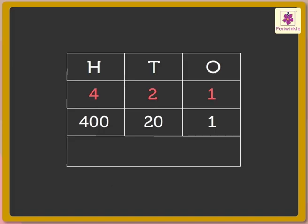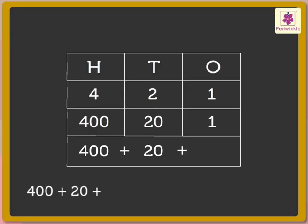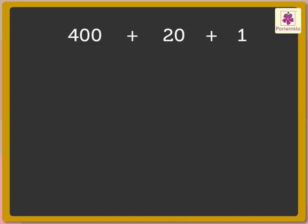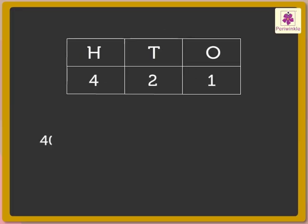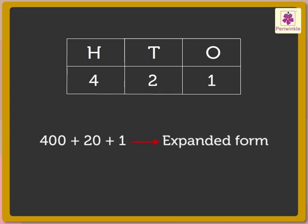Now, let us write this number as the sum of the place value of its digits. Thus, we get four hundred plus twenty plus one, which is the expanded notation of the number 421. When the number is in its expanded form, we can write it in the standard form by placing the digits in the respective columns of the place value chart. Here, four hundred plus twenty plus one is called the expanded form, and the number 421 is called the standard form.